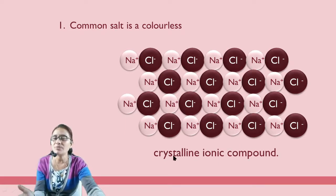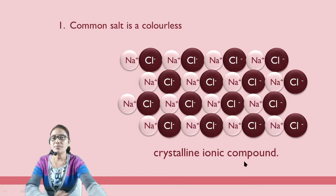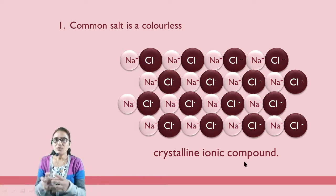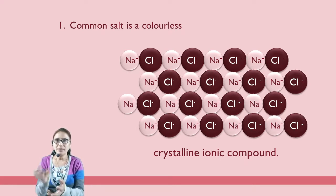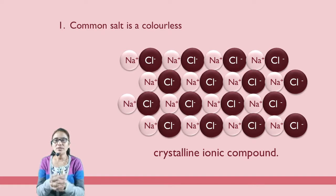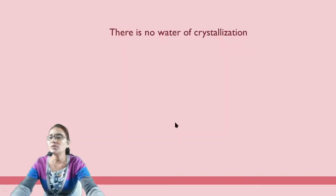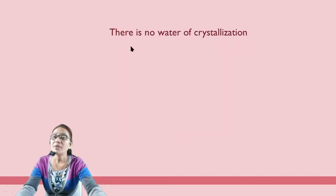Crystalline means it is in crystal form and it is smooth. An ionic compound is a compound formed by a give-and-take relation. Sodium has a tendency to lose an electron, whereas chlorine has a tendency to accept an electron. This give-and-take relation is the reason why the ionic compound is crystalline in nature.